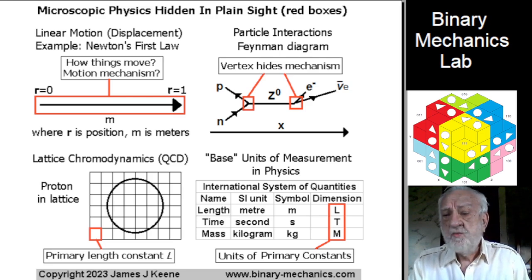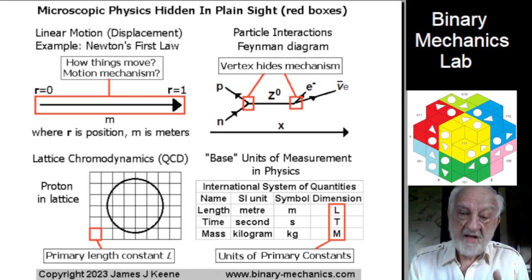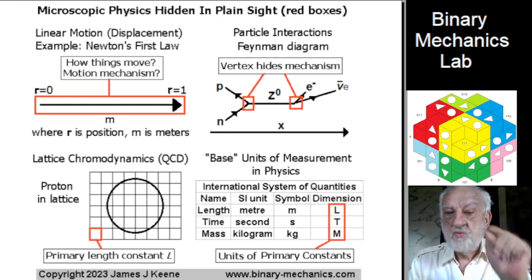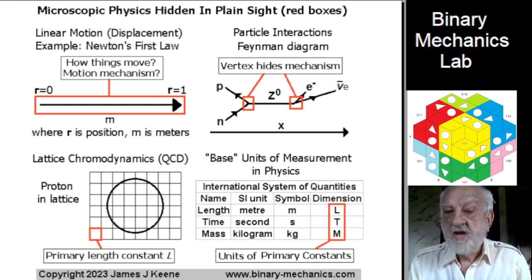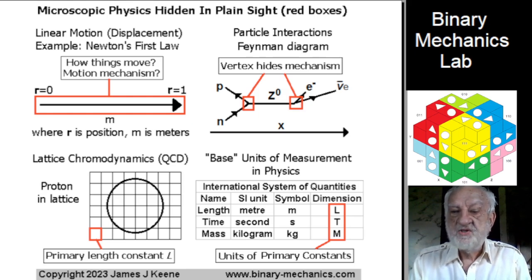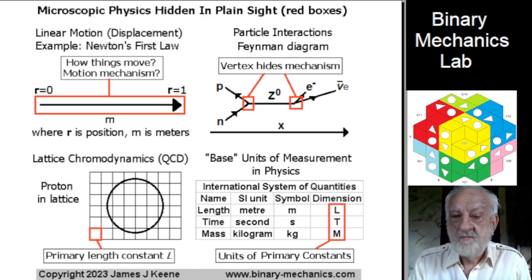For example, with vacuum permittivity normalized, one may write alpha equals E squared over 2HC. This equation states that these so-called constant values are not independent, not fundamental, and indeed could not be fundamental. Think about that.